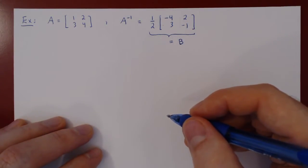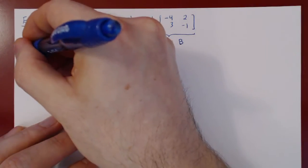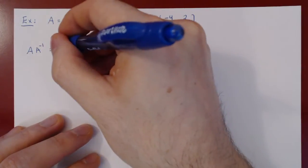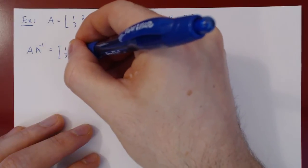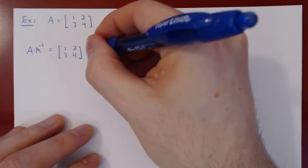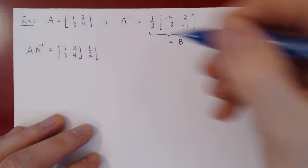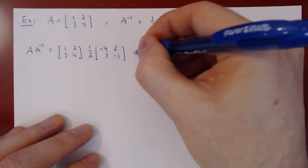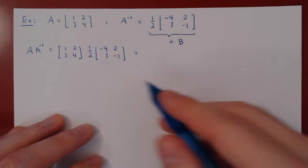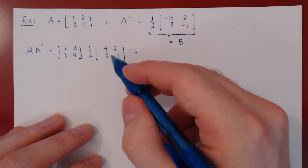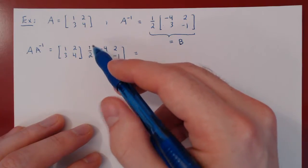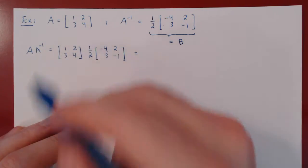Let's check that A times B equals I, and that B times A also equals I. So let's compute AB: A times A inverse is [1, 2; 3, 4] times what we claim to be A inverse, (1/2)[-4, 2; 3, -1]. Now here you have two options — you could multiply the matrix by one half and then perform the multiplication, but as one half is a scalar multiple it can be moved up front of the multiplication, which will simplify your calculations.